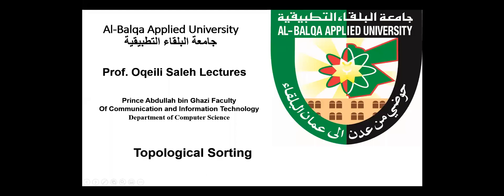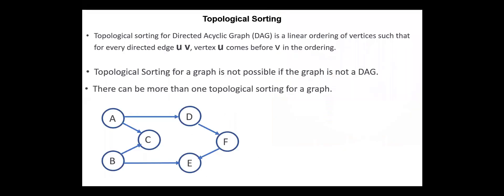Hello, everyone. Today our topic is topological sorting. Topological sorting for a directed acyclic graph is a linear ordering of vertices such that for every directed edge U, V, vertex U comes before V in the ordering. Topological sorting for a graph is not possible if the graph is not a directed acyclic graph.